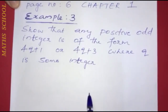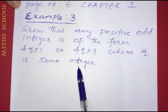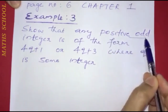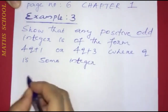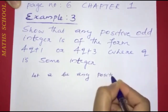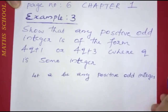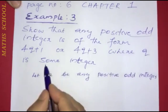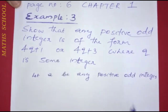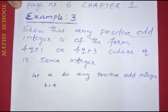Next example: show that any positive odd integer is of the form 4q plus 1 or 4q plus 3, where q is some integer. Let a be any positive odd integer. We add a clue from the question and take b equal to 4.